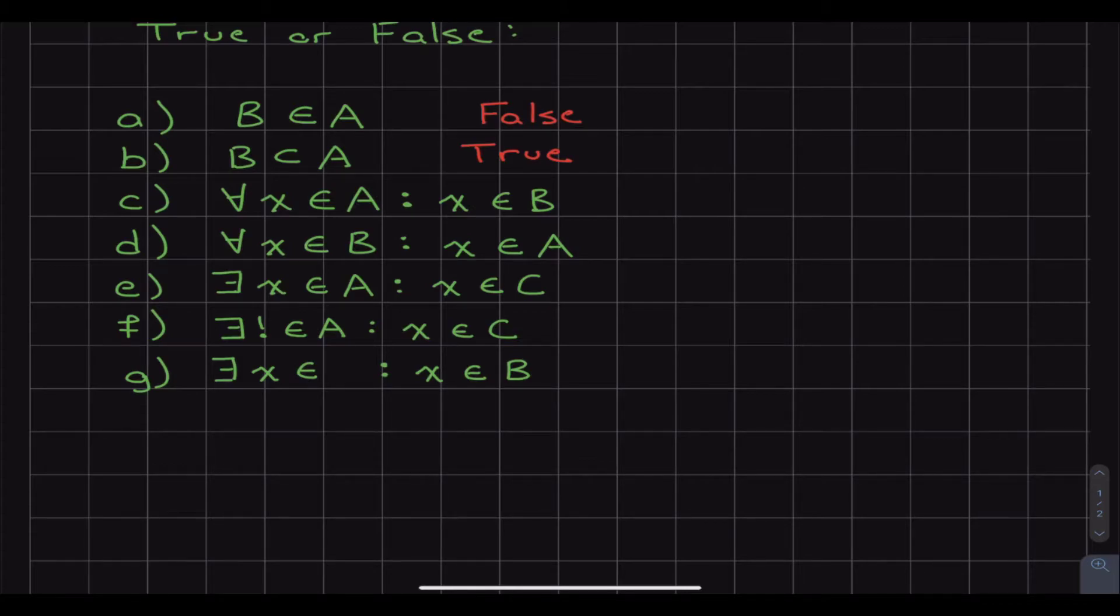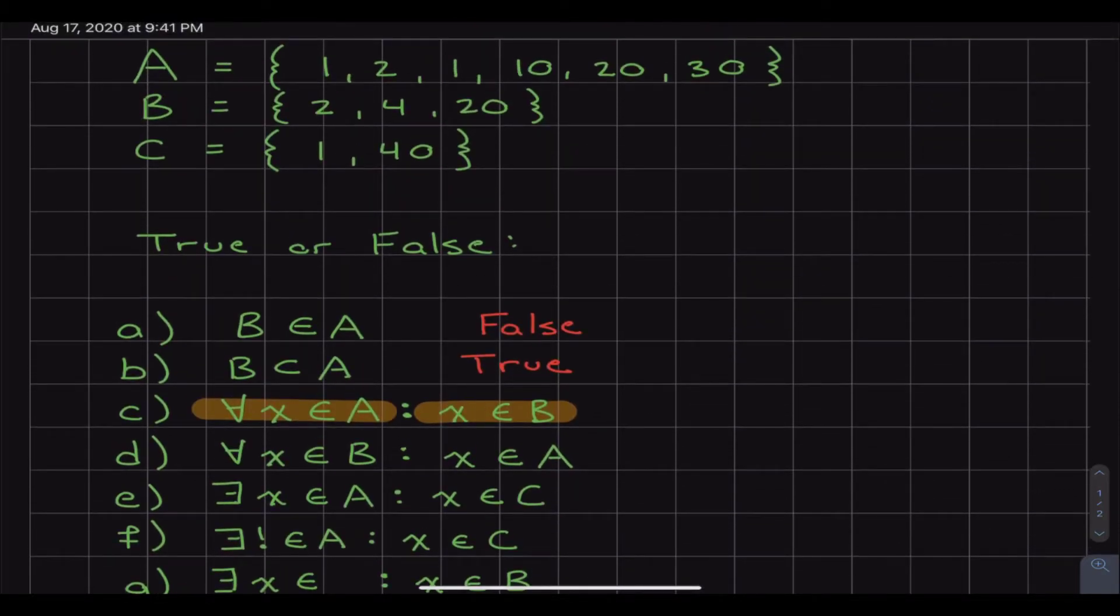And what that means right there is for every. So if we were just to read this going from left to right as usual, it says for every X element in A, that X element also exists in B. So what is this saying is that every number that is found in set A is also found in set B.